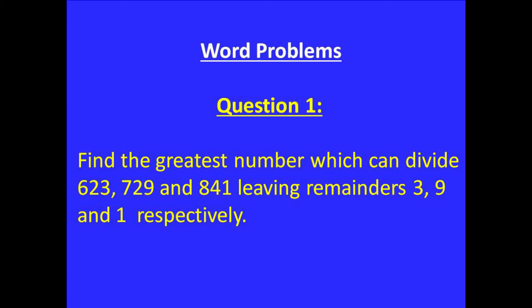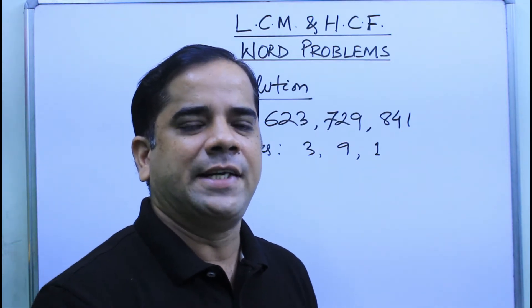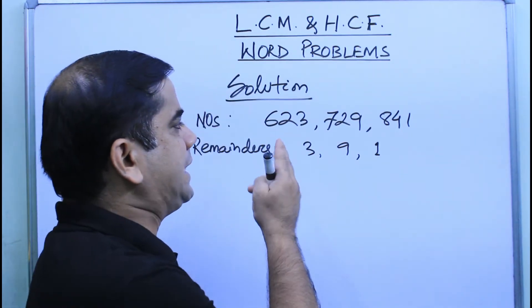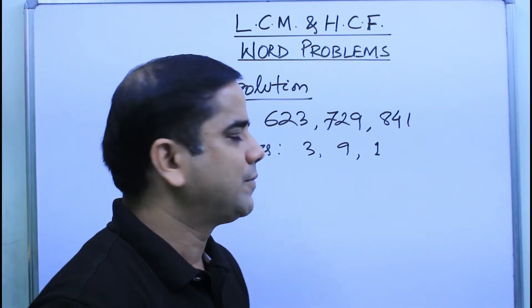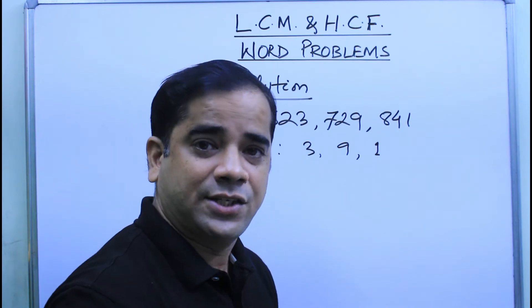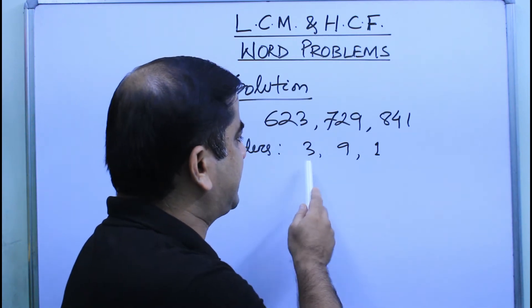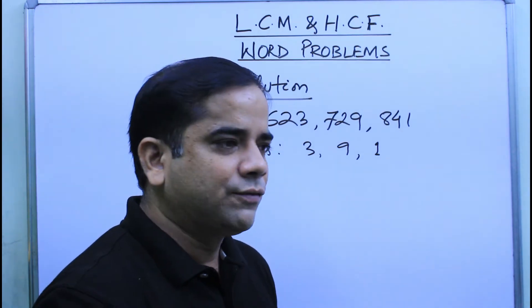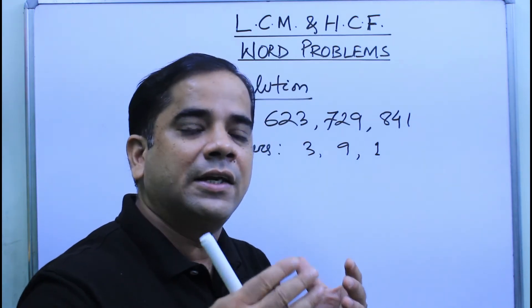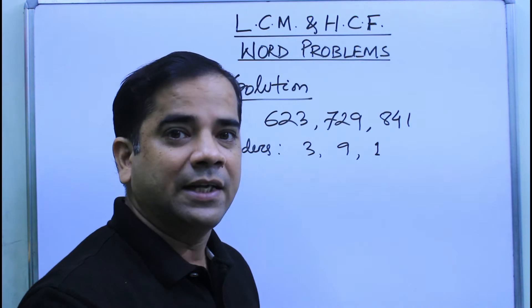Find the greatest number which can divide 623, 729, and 841 leaving remainders 3, 9, and 1 respectively. As per the given data, we have numbers 623, 729, and 841. We need to find out the highest number that will divide each of these numbers leaving behind those remainders.